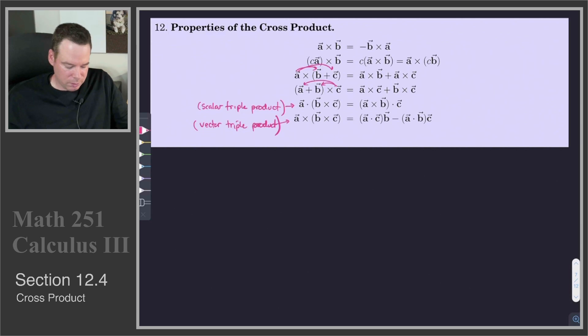And so A cross B cross C is equal to, and it's showing here that it's a linear combination of B and C, and the weights or the coefficients in front of the B and C are given by scalars, which come from the dot products of the various original vectors.